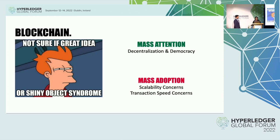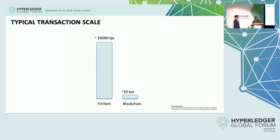In this presentation, we'll review some architectures of existing Hyperledger projects to see where issues come in. Looking at a typical transaction scale — in FinTech today, we process around 24,000 transactions per second. Blockchain started off with around 10 transactions per second, and though there are solutions coming in to increase that number, we still have a long way to reach 24,000.